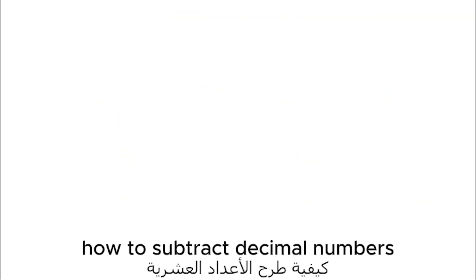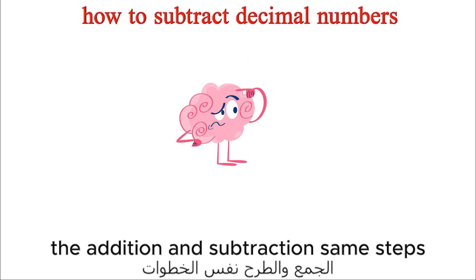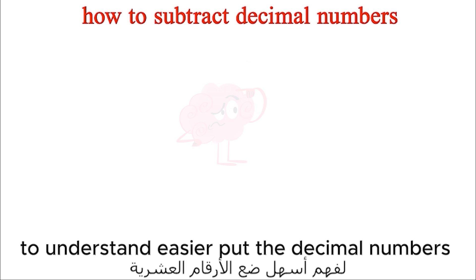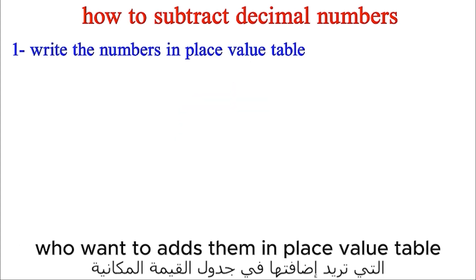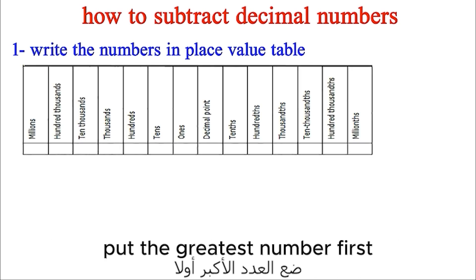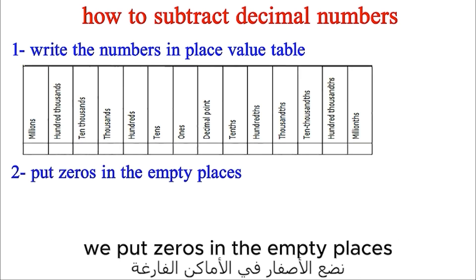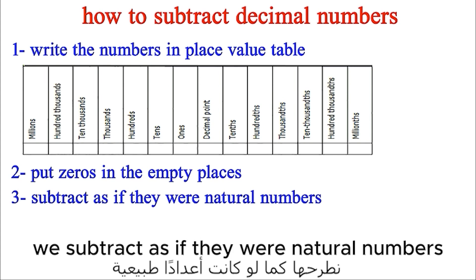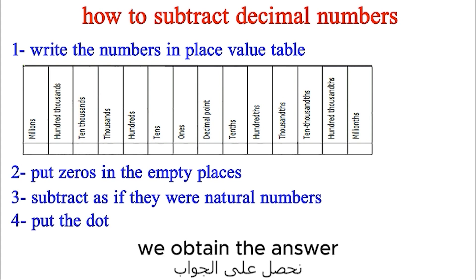How to subtract decimal numbers. The addition and subtraction steps are the same. Put the decimal numbers in a place value table with the greatest number first. Put zeros in the empty places. Subtract as if they were natural numbers. Put the dot. We obtain the answer.